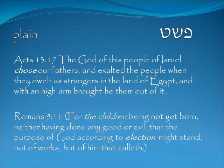Again in the simple meaning: Acts 13:17 — 'The God of this people of Israel chose our fathers and exalted the people when they dwelt as strangers in the land of Egypt, and with a high arm brought he them out.' Romans 9:11 — 'For the children not yet being born, neither having done any good or evil, that the purpose of God according to election might stand, not of works but of him that calleth.' The choosing is of God's choosing — there is an election by grace.